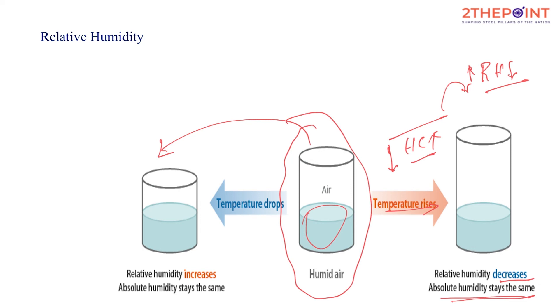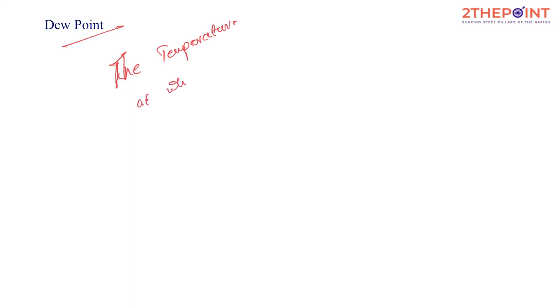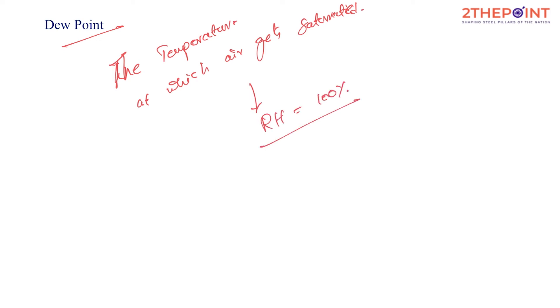The next part is dew point. Dew point is the temperature at which a unit volume of air gets saturated — that is, when the relative humidity becomes 100 percent. When relative humidity becomes 100 percent the air is said to be saturated. This is the dew point. If the temperature drops further, relative humidity would become more than 100 percent — beyond this the air is supersaturated.